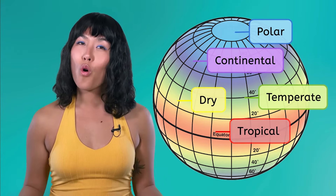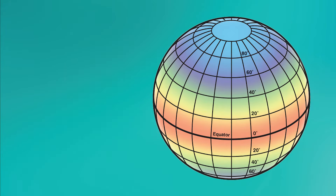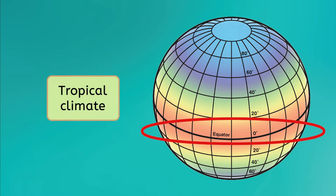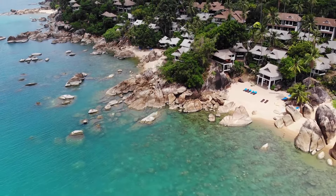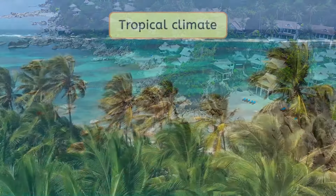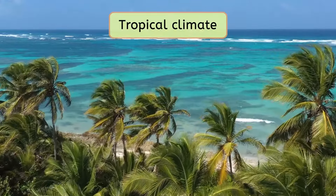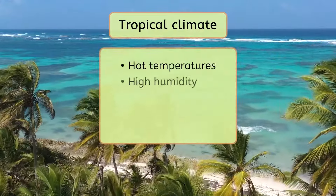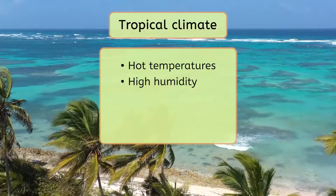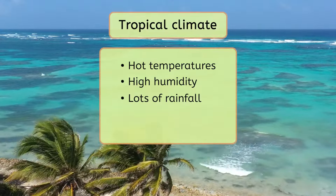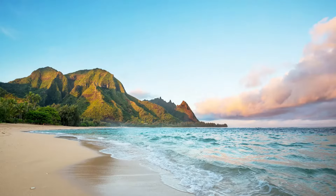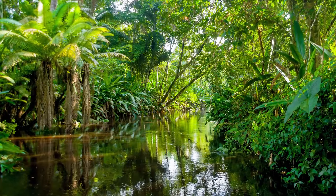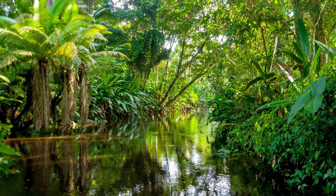Let's start with the warmest climate type. Places with a tropical climate are found in the area right around the equator. If you're hoping for a beach house, this might be the zone for you. Tropical regions are characterized by hot temperatures and high humidity throughout the year. They also get lots of rainfall, which helps lots of plant and animal life flourish. The beaches of Hawaii and the Amazon rainforest both have a tropical climate.